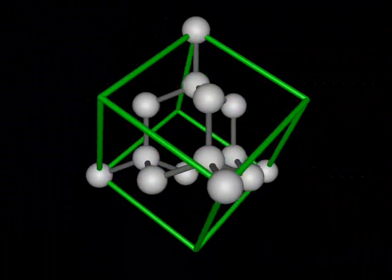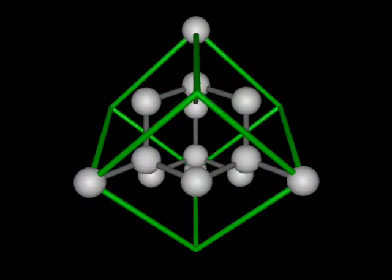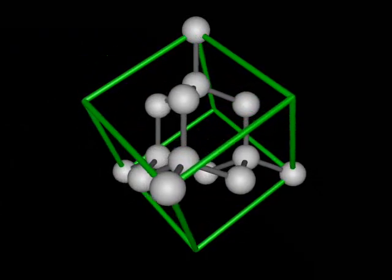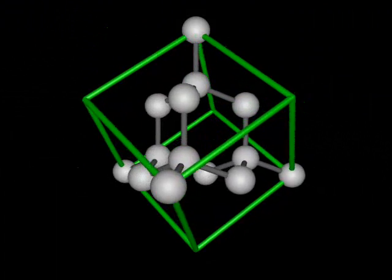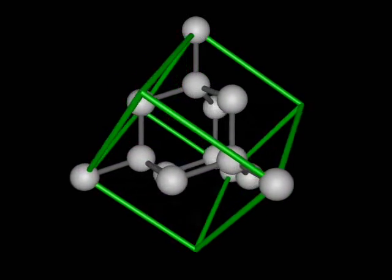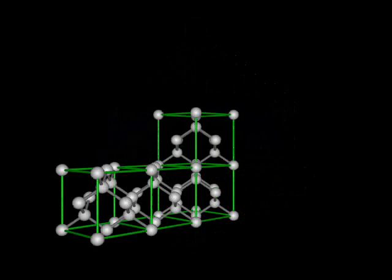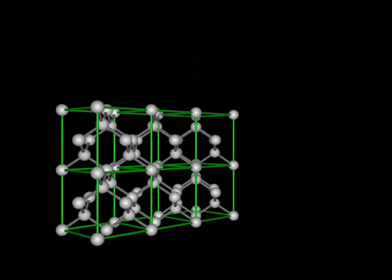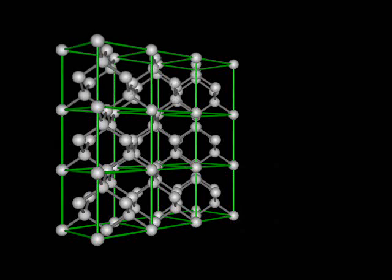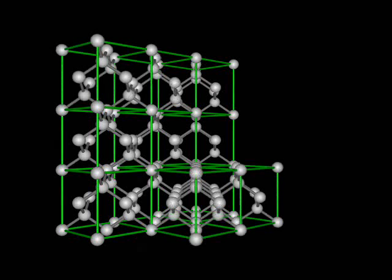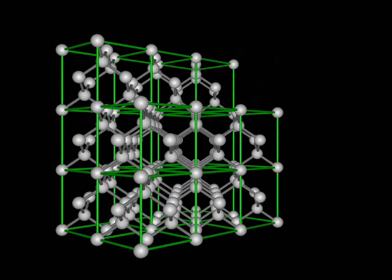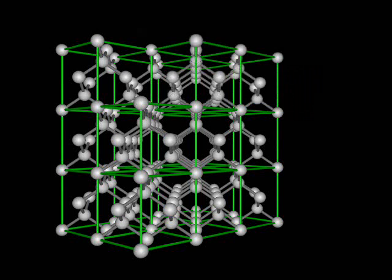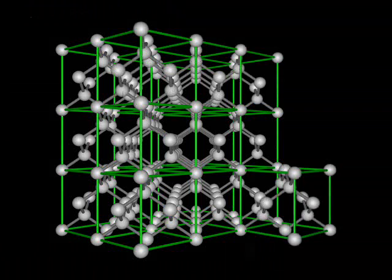By tilting and rotating the cube, this tetrahedron can be displayed in the same orientation as it was seen before. Repetition of this cube also generates the diamond structure, but from the cubic perspective. Here we generate a larger scale model of the diamond structure by stacking this unit cell into an array that is three cells wide, three cells deep, and three cells high.